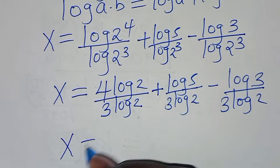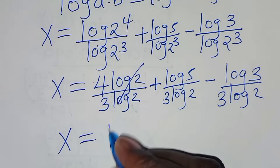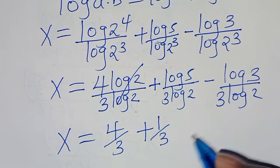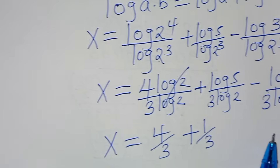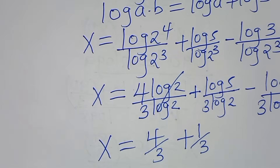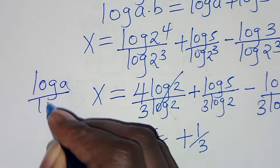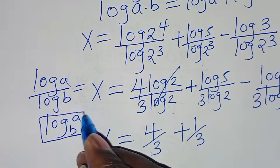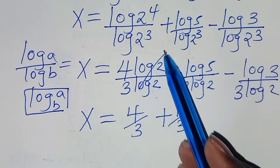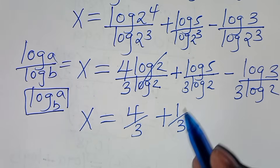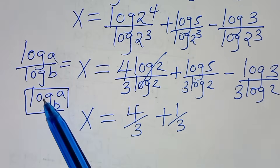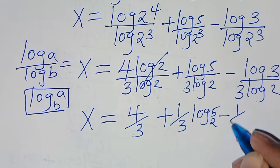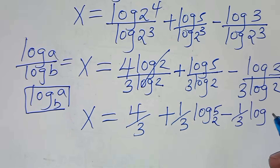Simplifying log(2) and log(2), we get 4/3 plus (1/3)·log(5)/log(2), subtract (1/3)·log(3)/log(2). Now log(5)/log(2) is in the form log(a)/log(b), which equals log base b of a. So applying this property, x equals 4/3 plus (1/3)·log₂(5), subtract (1/3)·log₂(3).